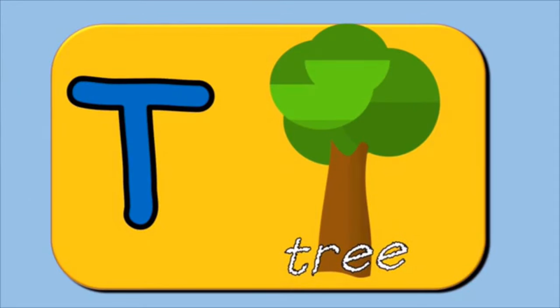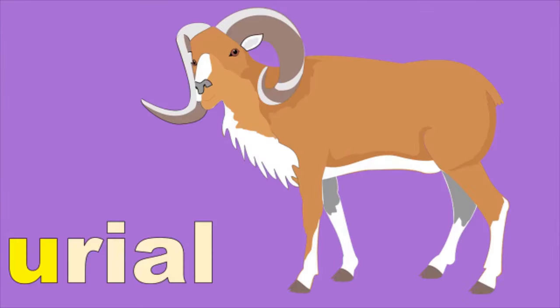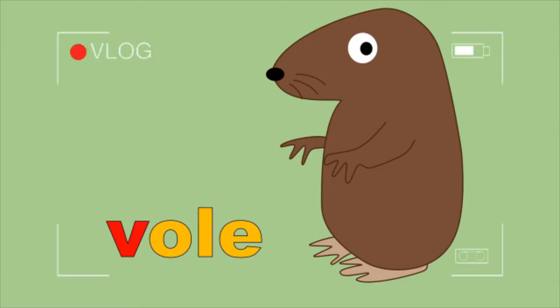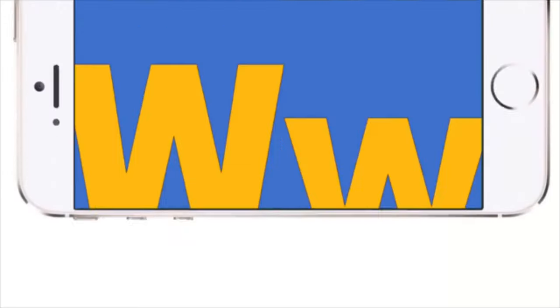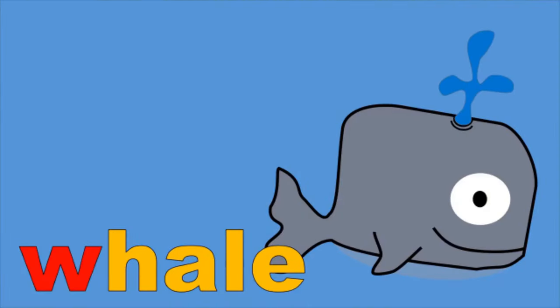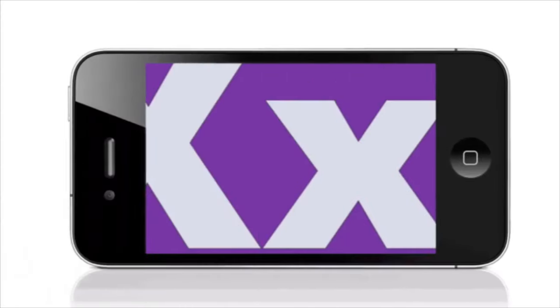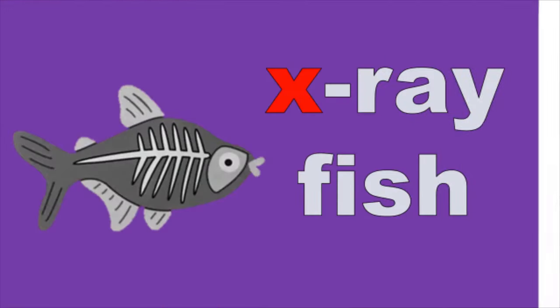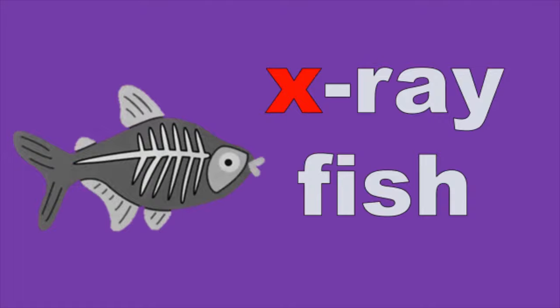T is for tree, U is for uriel, V is for vol, W is for whale, X is for x-ray fish.